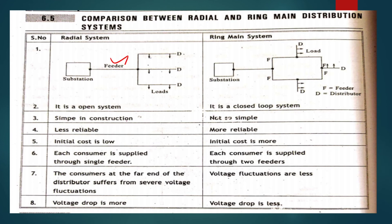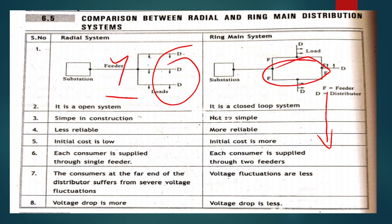The interconnected system is simple in construction but allows alternative paths. If any problem occurs in a feeder, we can use the other substation path for power supply. In the radial system, each consumer is supplied through a single feeder only, while in the ring/interconnected system each consumer is supplied through two feeders. Consumers at the far end of the distributor suffer from voltage fluctuations and voltage drops in the radial system. If any fault occurs, the total system is damaged in the radial case, whereas in the interconnected system we can use another path.